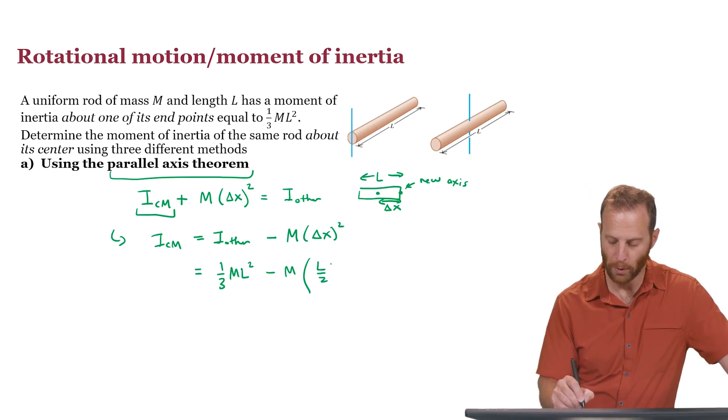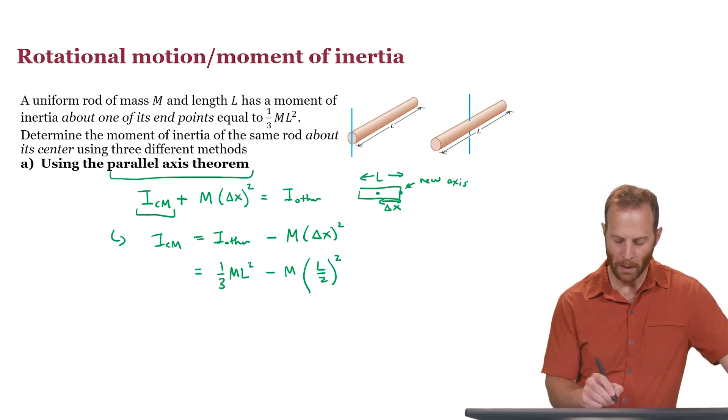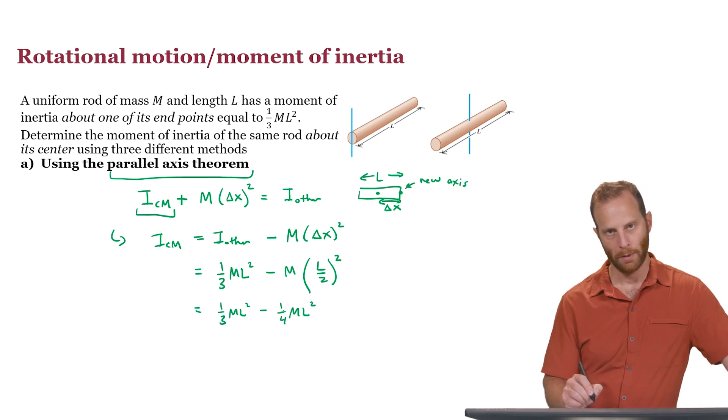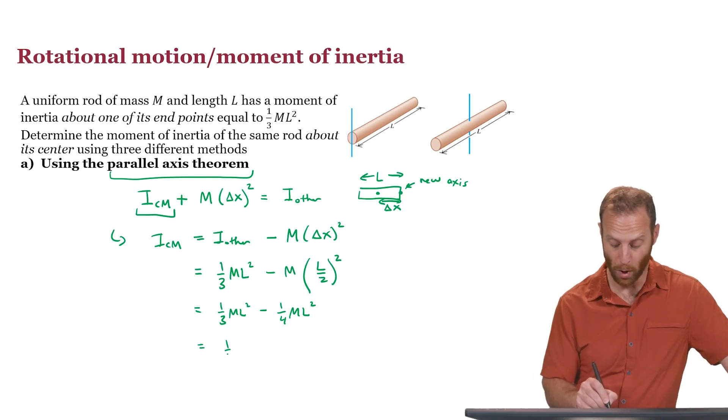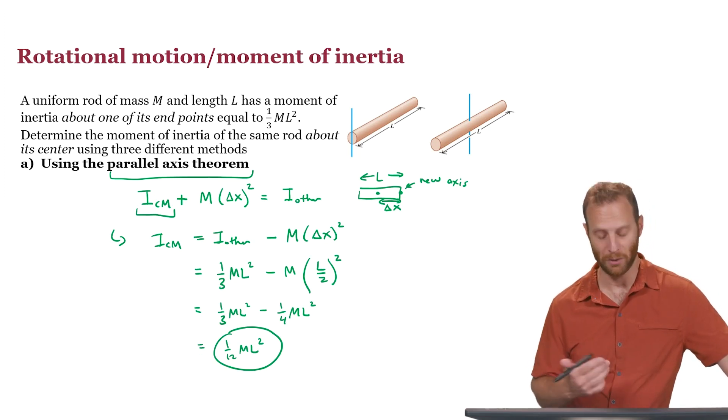Don't forget though, we are trying to remember to square those quantities, that's what the formula tells us. So what we're supposed to do is do one-third ml squared, and subtract off one-quarter of ml squared. If you find the common denominator here, four-twelfths minus three-twelfths will give you one-twelfth for the answer, the moment of inertia of a thin rod about its center.